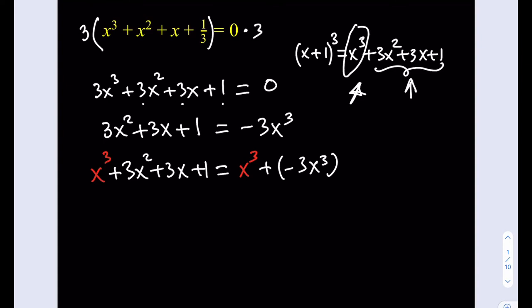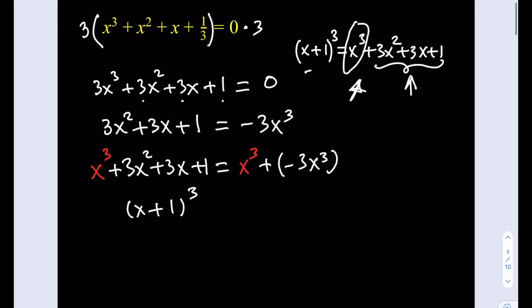But what happens after this is the left-hand side is actually a good thing, right? This becomes (x+1)³, which is what we were trying to achieve, as you see here. And then the right-hand side can also be taken care of because x³ and -3x³ are like terms. So we can go ahead and combine them, and that gives us -2x³.